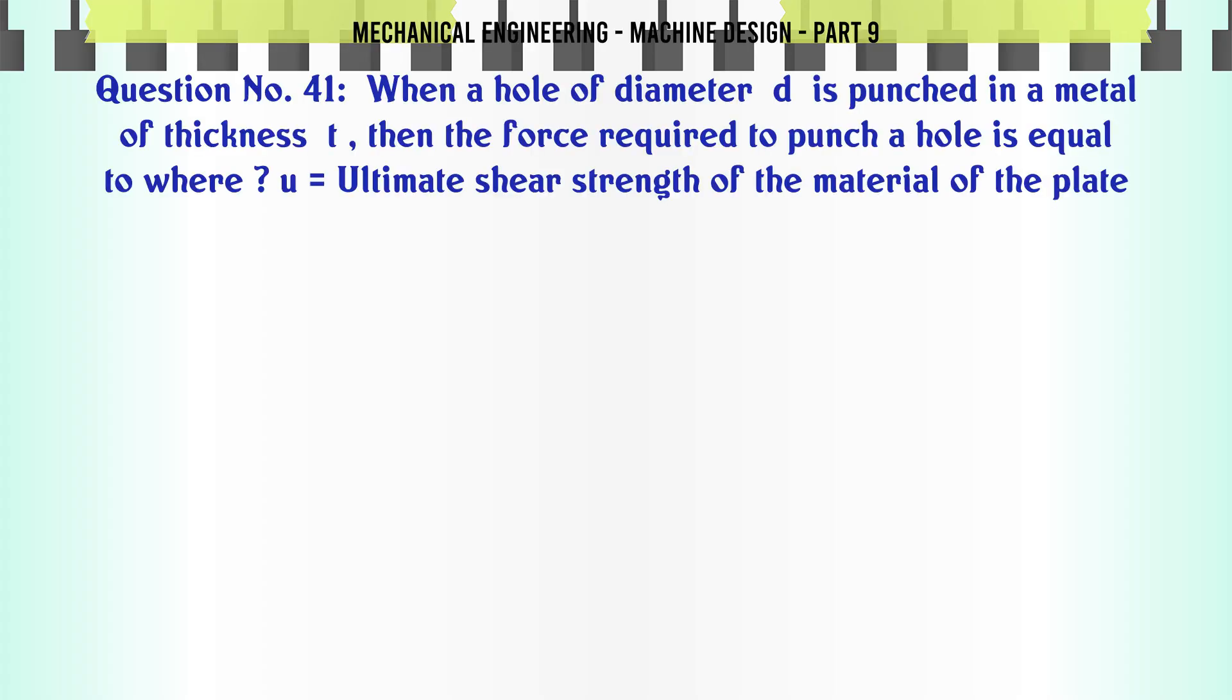When a hole of diameter D is punched in a metal of thickness T, then the force required to punch a hole is equal to, where τu is ultimate shear strength of the material of the plate: A. D×T×τu, B. π×D×T×τu, C. π×D²×τu, D. π×D²×T×τu. The correct answer is π×D×T×τu.